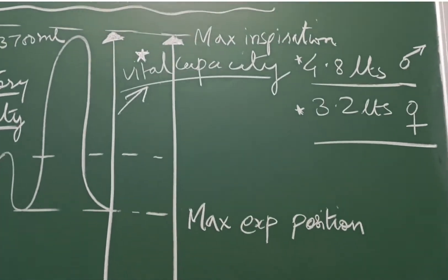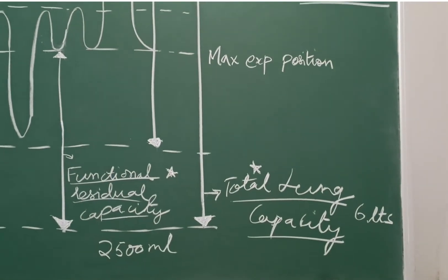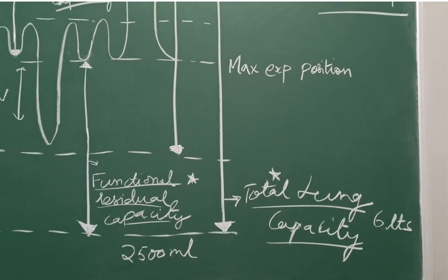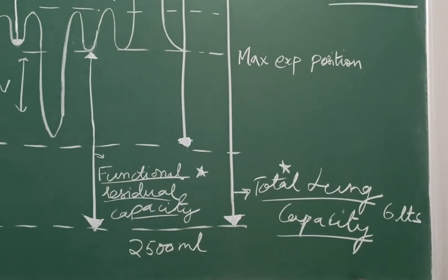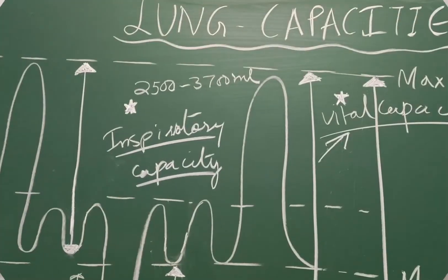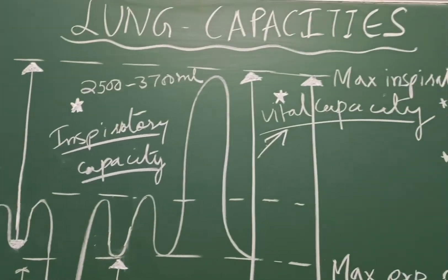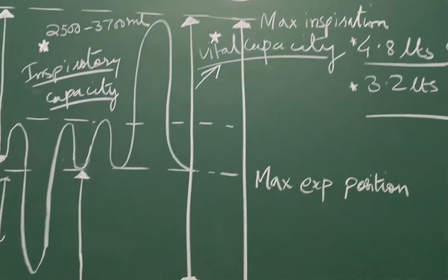As depicted in the diagram, vital capacity is 4.8 litres in the male and 3.2 litres in female and the last capacity is the total lung capacity which is 6 litres. Vital capacity can also be computed as tidal volume plus inspiratory reserve volume plus expiratory reserve volume.